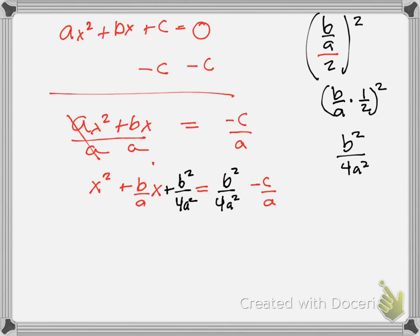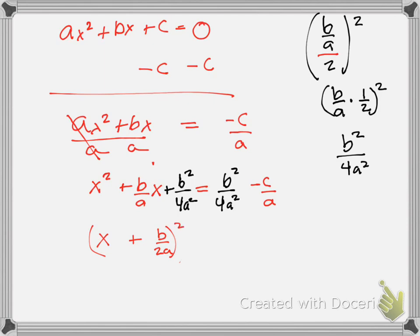What would be my next step? Now that it's a perfect square trinomial, we're going to factor the left side. The left side becomes X plus B over 2A, squared.